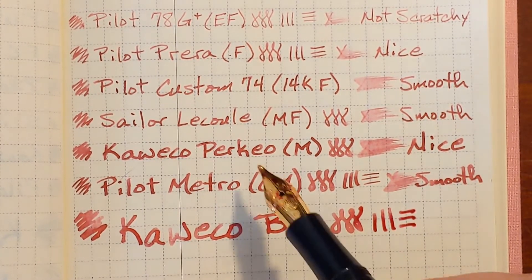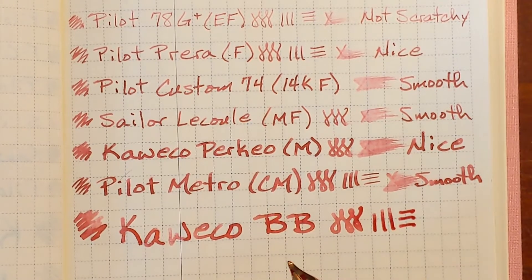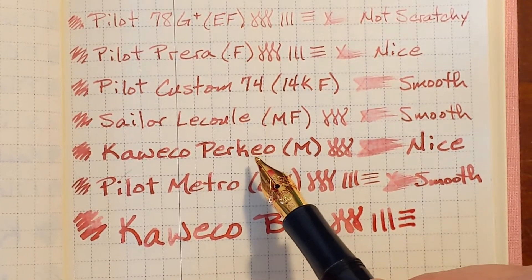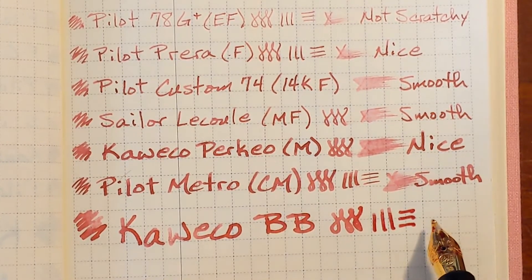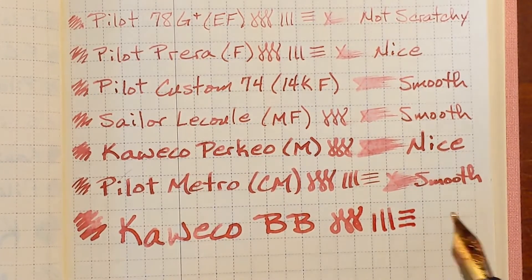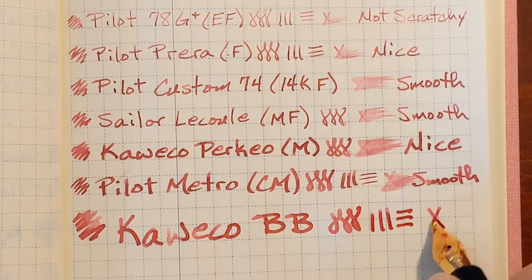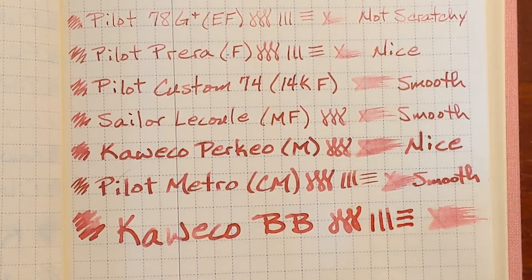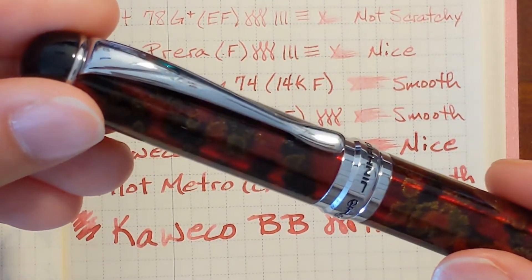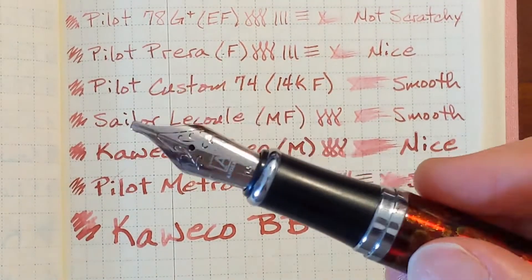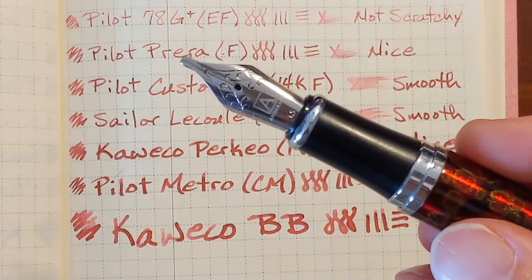It sounds like the same sound that the Perkeo was making, but it's not as pleasant as the Perkeo. It feels like I can feel the nib slit rubbing across the paper. And finally, this is a Jinhao X750 with a 1.5 stainless steel stub nib.